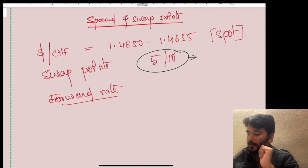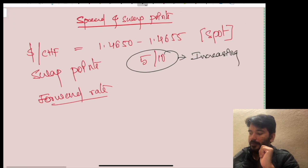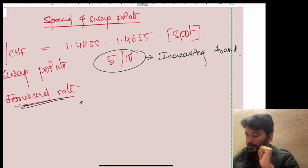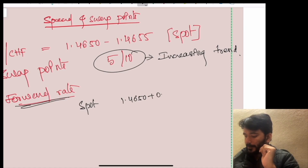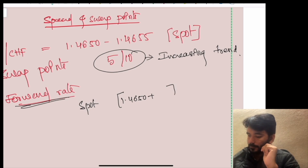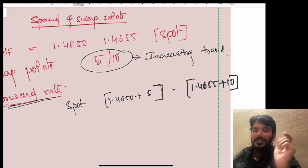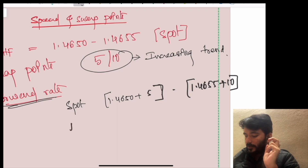When finding out the forward rate: the spot rate is 1.4650 / 1.4655. We add the swap points — 5 points to the bid and 10 points to the ask. Because the swap points are in increasing trend, the forward rate will be 1.4655 / 1.4665. This is the forward rate.